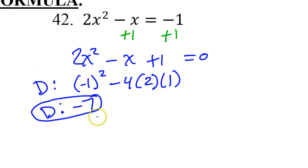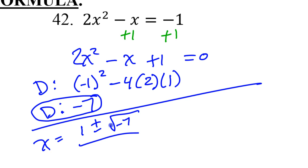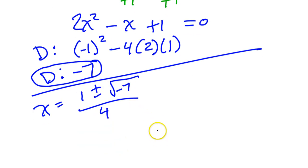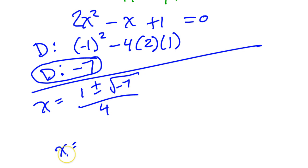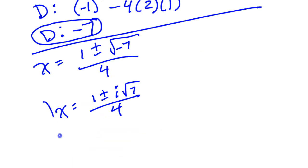And then you can go on and finish the problem from there. So the answer is going to be opposite of b. So that's positive 1 plus or minus square root of negative 7 all over 2a. 2a is 4. So that's going to give me 1 plus or minus i radical 7 over 4. And there's nothing I can do with that. So that would be the final answer.